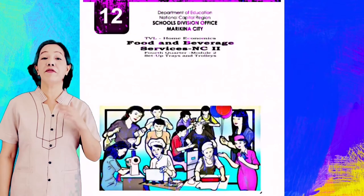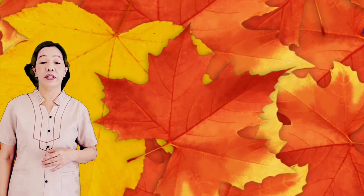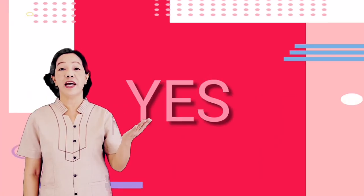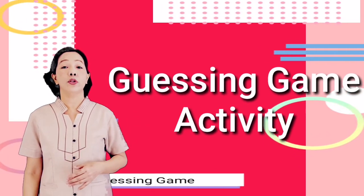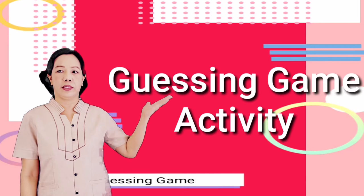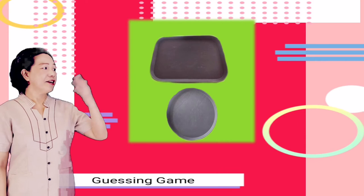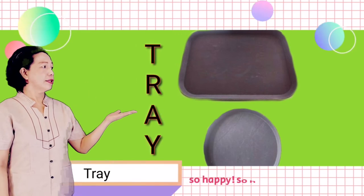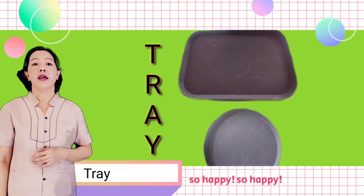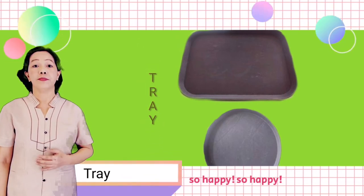First, you must be familiarized with the materials and equipment used for room service. Let's start with a guessing game activity. I am going to show you some of them on the screen — please try to name them one by one. Here is the first item. You are correct. This is a tray. It is used for carrying, holding, or displaying articles of food, glass, and plates.